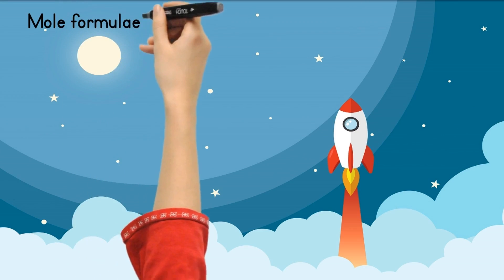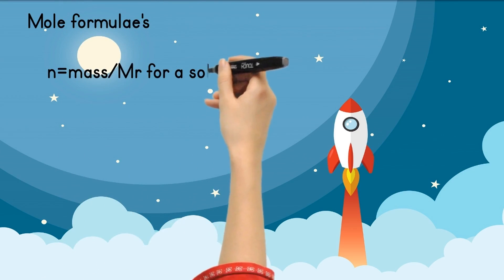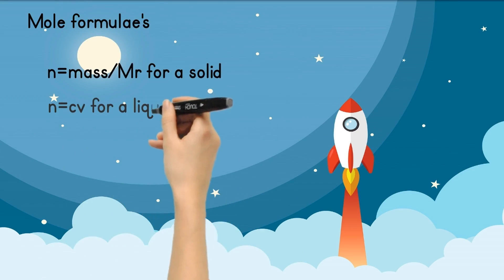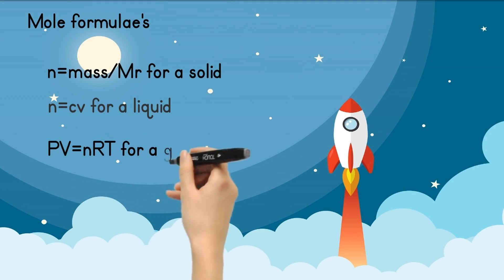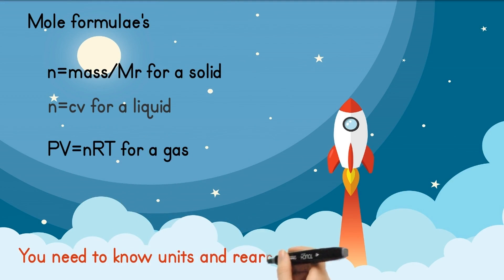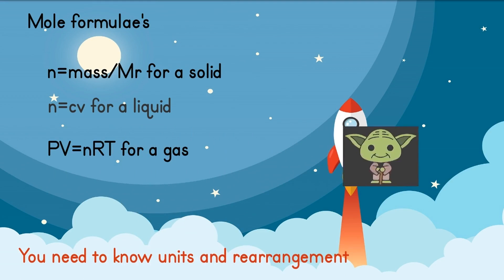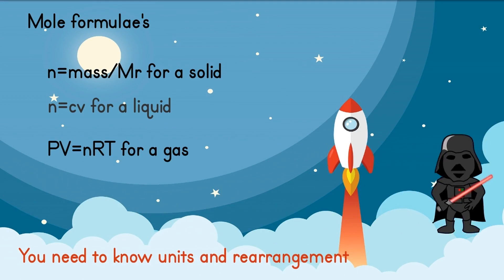There are three important mole formulae: n = mass/Mr for a solid, n = cv for a liquid, and PV = nRT for a gas, which is the ideal gas equation. Knowing the units and how to rearrange these formulae is shown in the tutorial video that accompanies this clip.